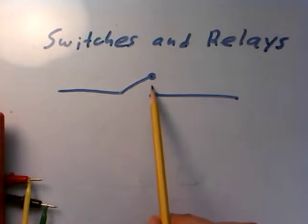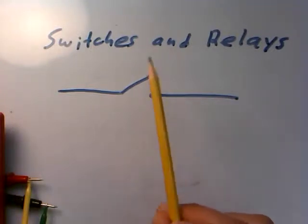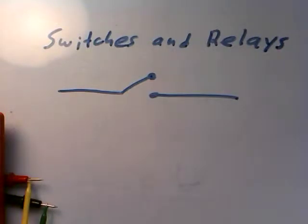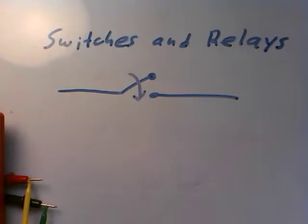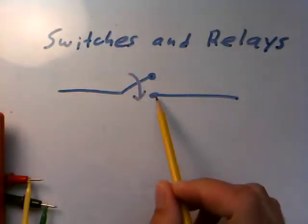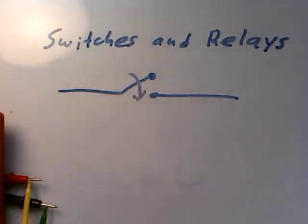You would encounter a gap here with essentially infinite resistance when the switch is open and you can't flow. Only when this part of the switch is pushed down so that it makes contact with the other terminal over here does current allow the flow, and we say the switch is closed.